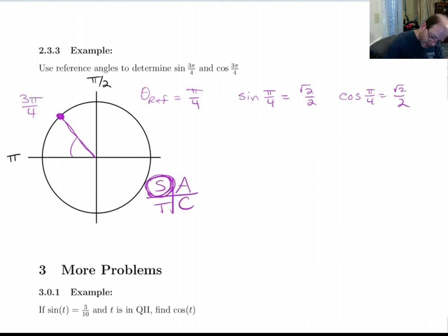We're in this quadrant here. So sine is positive. So sine of 3 pi over 4 is positive root 2 over 2. And you don't have to write plus in, but I'm doing it just for emphasis.